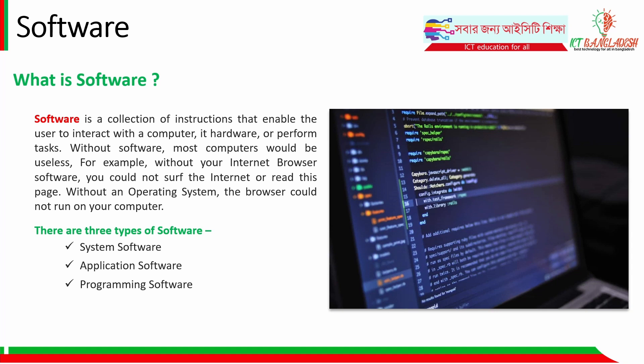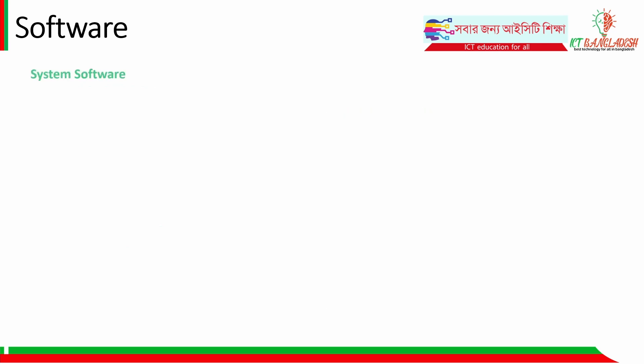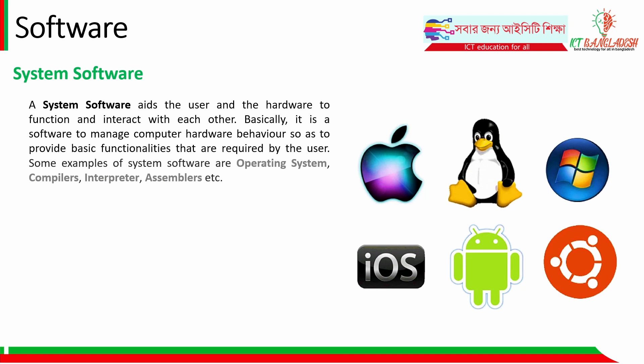For example, without an operating system, the computer cannot function. There are three types of software. System software aids the user and the hardware to function and interact with each other.